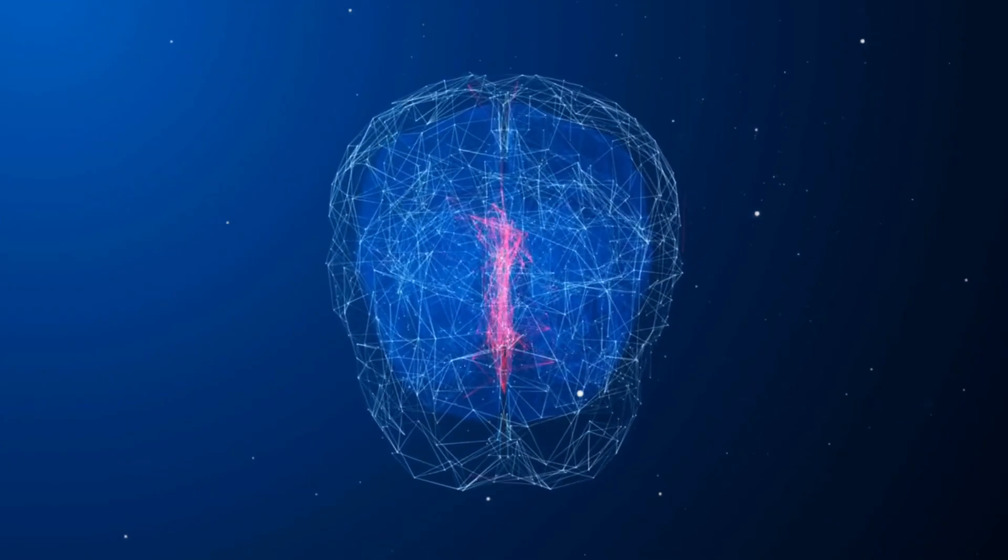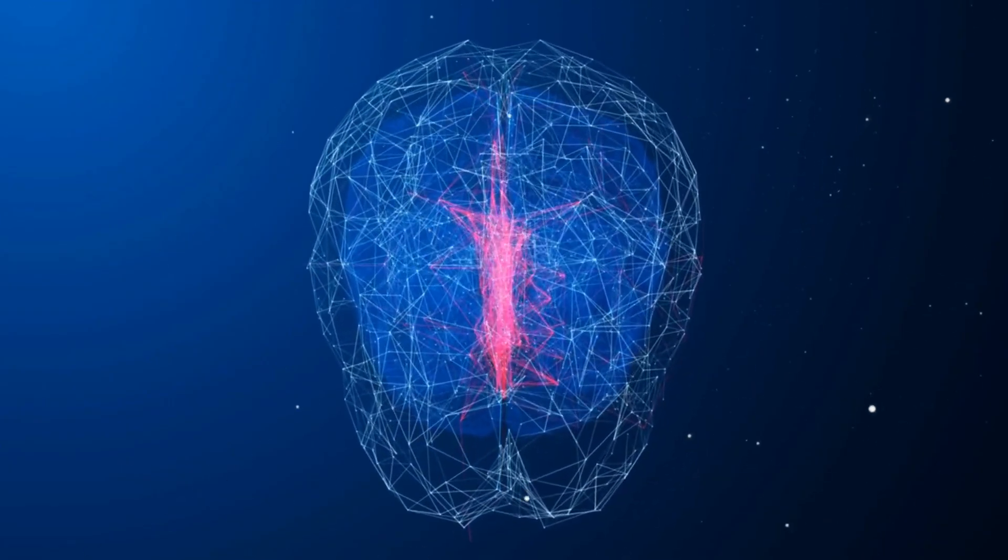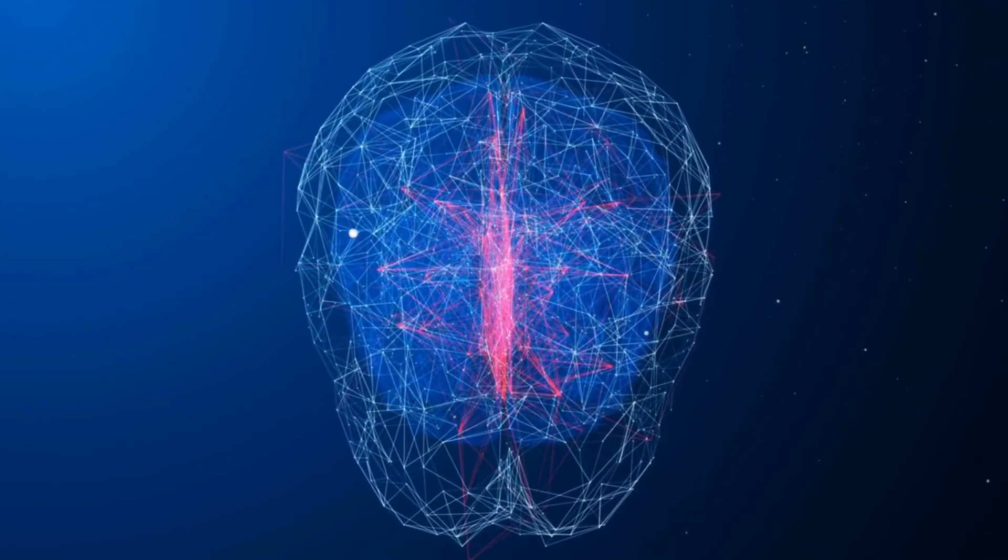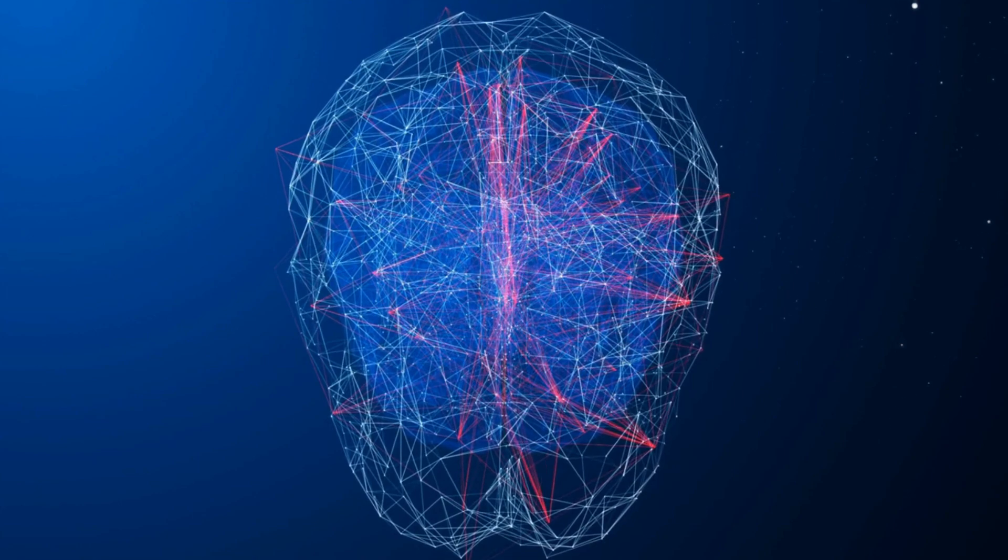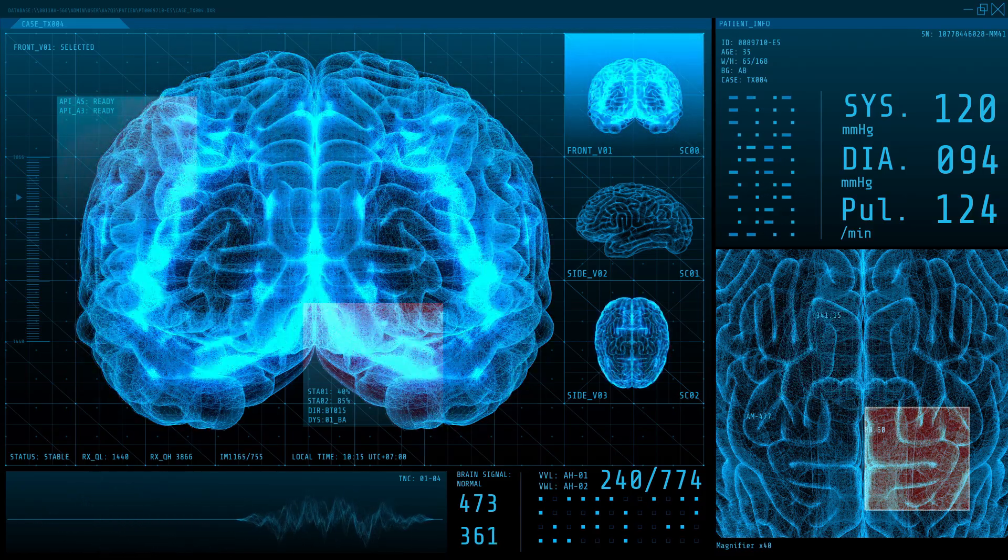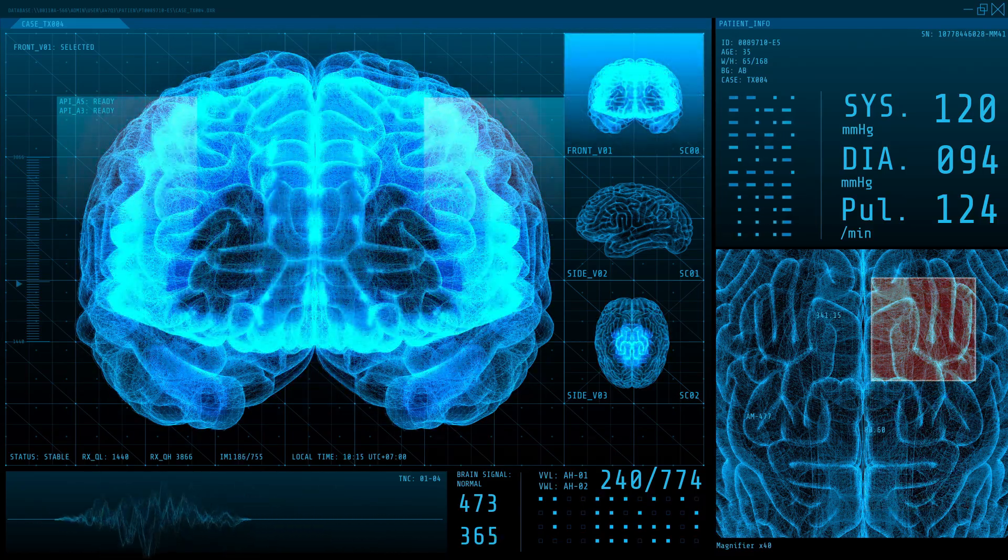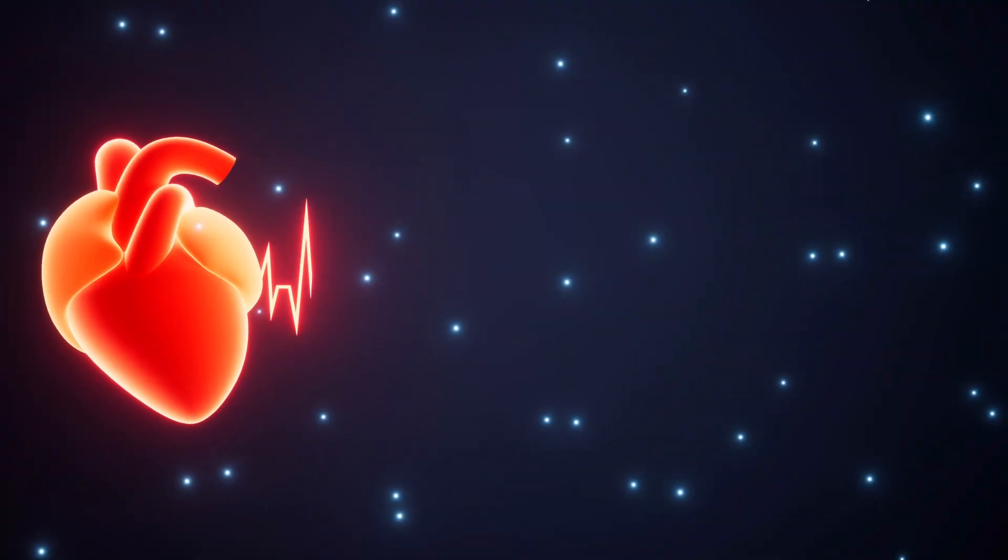Fear starts deep inside your brain in a small, almond-shaped structure called the amygdala. This is your body's built-in alarm system. When it detects something threatening, it signals your hypothalamus, which then triggers the release of adrenaline.